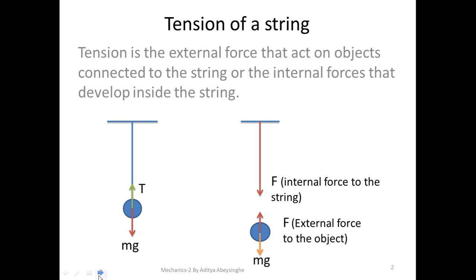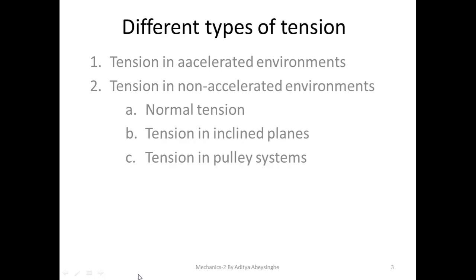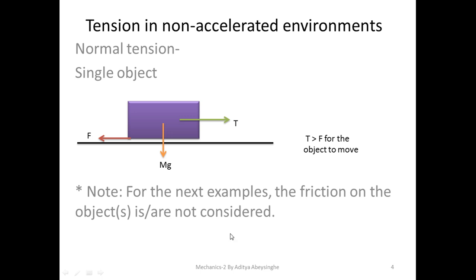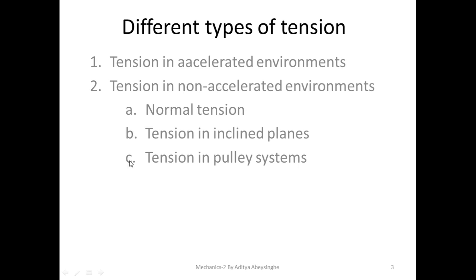Having explained what tension is, there are various types. Tensions can occur in both accelerated and unaccelerated environments. In unaccelerated environments, tensions can be divided into three types: normal tension, tension in inclined planes, and tension in pulley systems. The other type is tension in accelerated environments. I'll begin with non-accelerated environments and then move to accelerated ones.